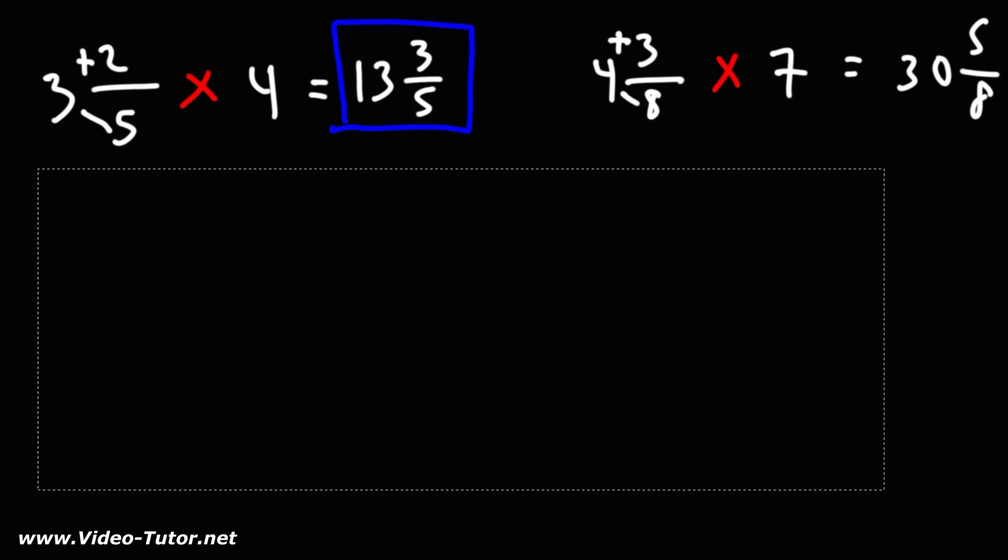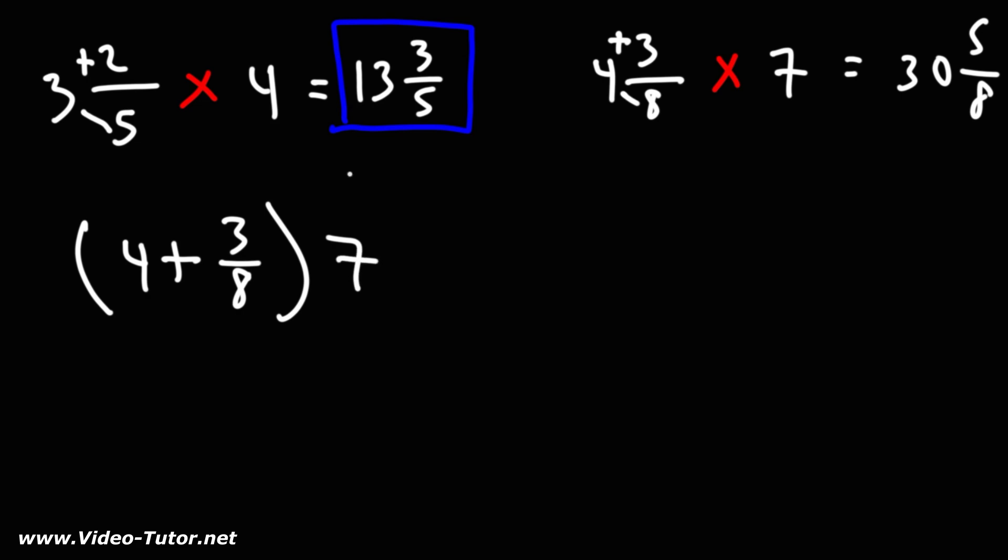Now let's do it the other way. 4 and 3 eighths, that's 4 plus 3 eighths. And then we're going to multiply that by 7. We know 4 times 7 is 28. And 3 eighths times 7: 3 times 7 is 21, so that's 21 over 8.